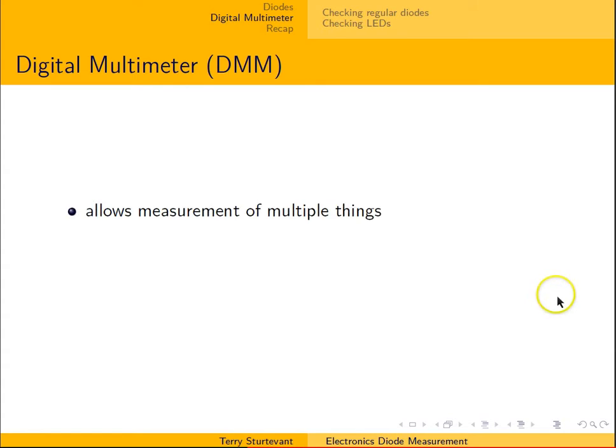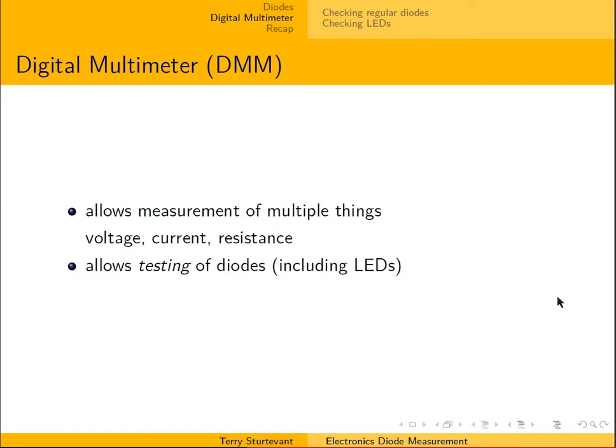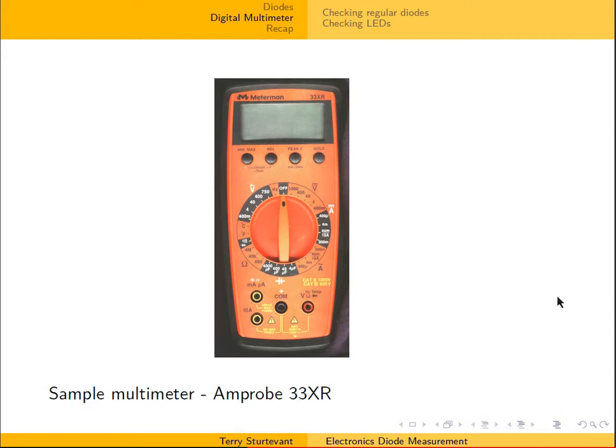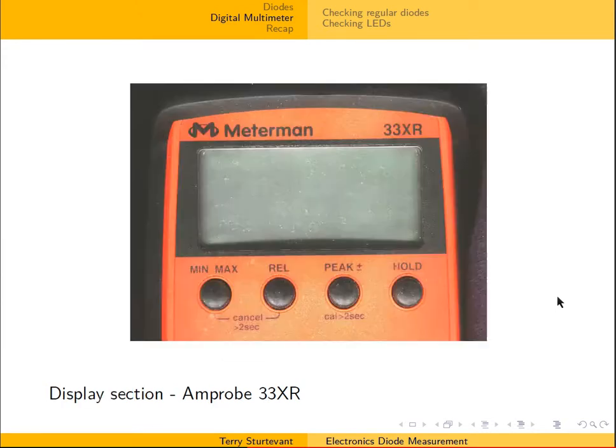A digital multimeter allows the measurement of several things, such as voltage, current, and resistance. It also allows testing of diodes, including light emitting diodes. Here's a sample multimeter, the Amprobe 33XR.